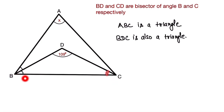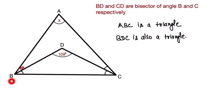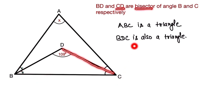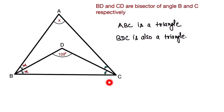BD is the bisector of angle B, so both sub-angles are equal. DC is the bisector of angle C, so both sub-angles are also equal. Let this angle be alpha — so both halves of angle B are alpha — and let this angle be beta, so both halves of angle C are beta.